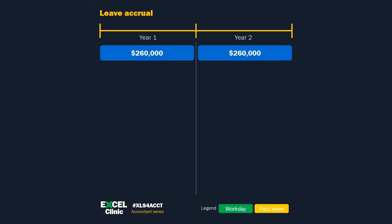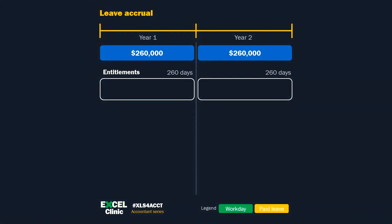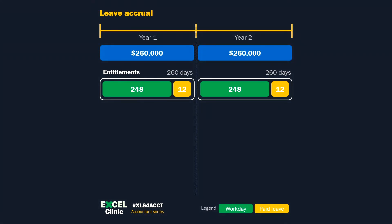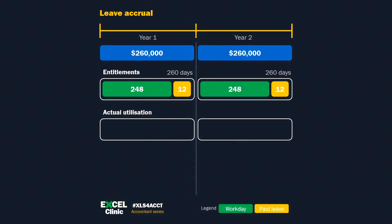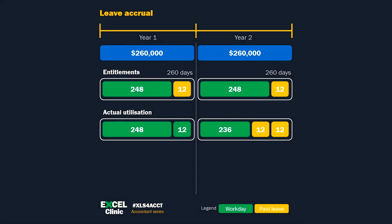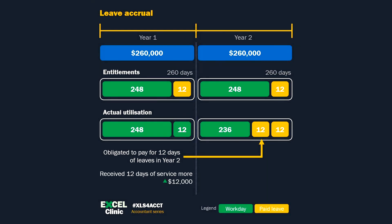Let's consider this example. Jack is paid $260,000 a year. There are 260 working days each year. Of the 260 days, Jack only needs to work 248 days and he is entitled to 12 days of paid leave. Unutilized leave in year 1 can be carried forward to year 2. Due to COVID travel restrictions in year 1, Jack did not take any leave. Following the easing of restrictions in year 2, he went on a vacation and took 24 days of leave — 12 from the current year entitlement and 12 from year 1. IAS 19 says that at the end of year 1, the entity has an obligation to pay for the 12 days of leave carried forward and taken in year 2. Explaining this from another angle — the profit and loss approach — the entity received 12 days of service more in year 1 and 12 days less in year 2, so we should allocate higher costs to year 1: $12,000 additional costs in year 1 and $12,000 less in year 2.